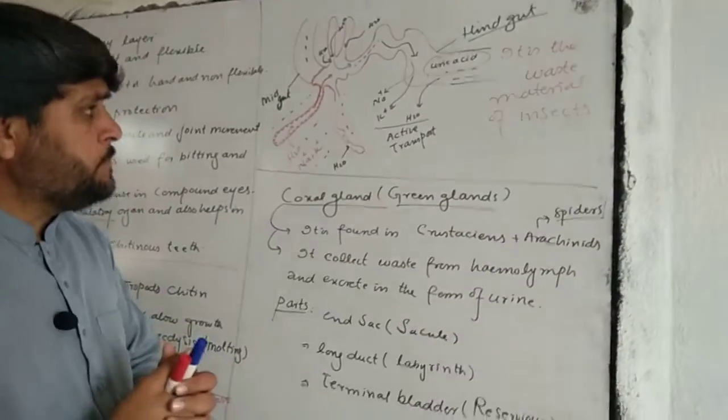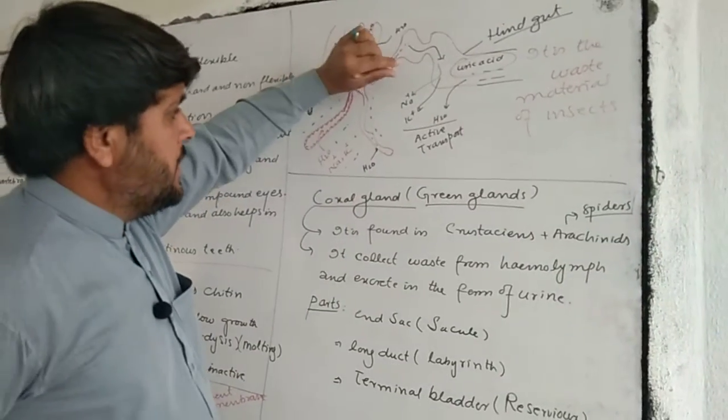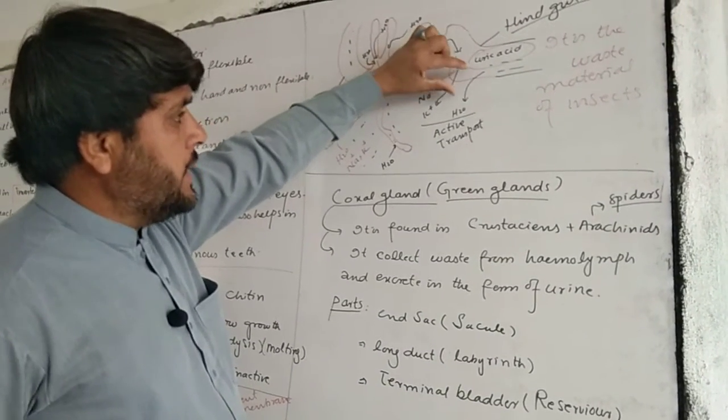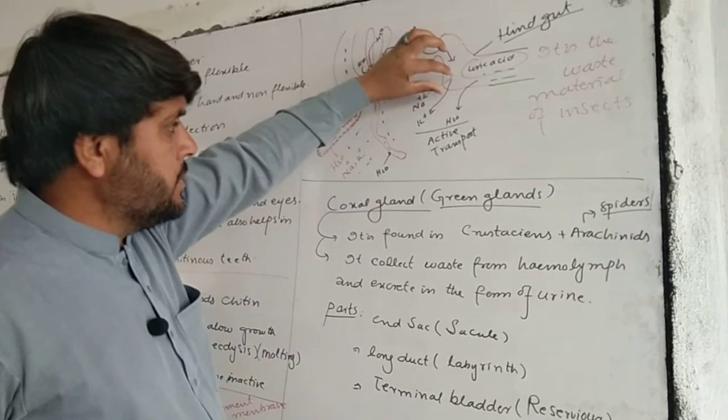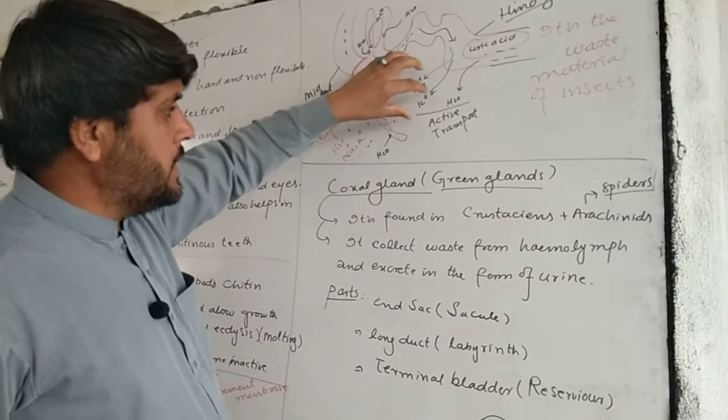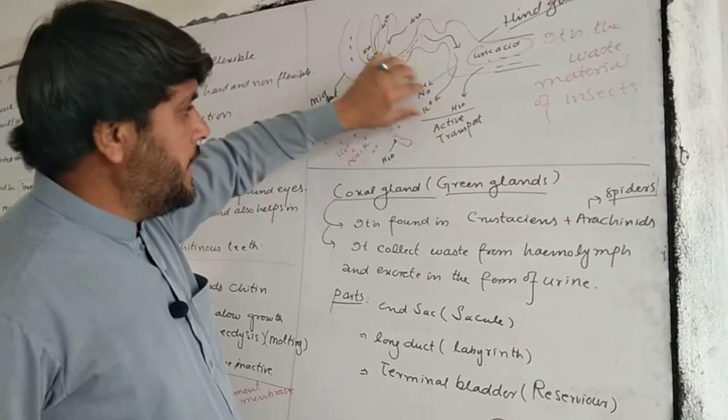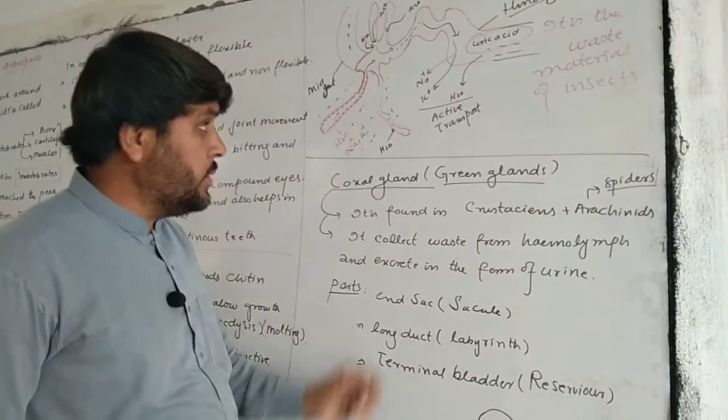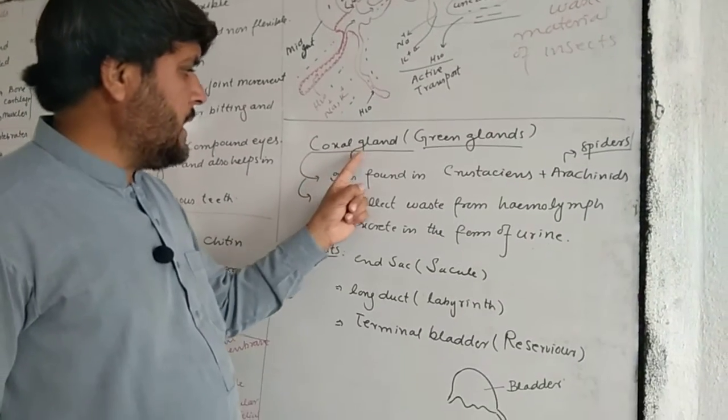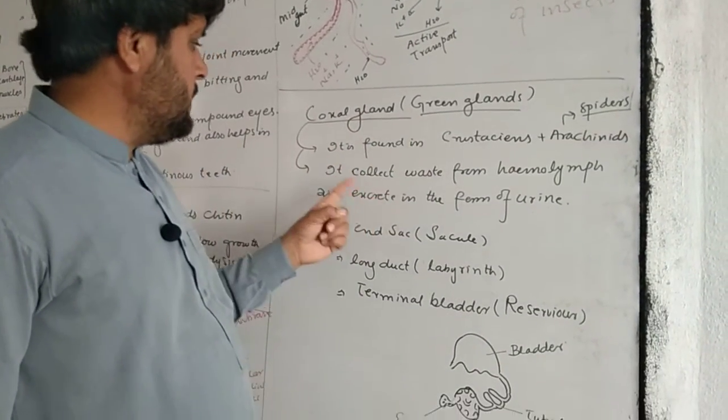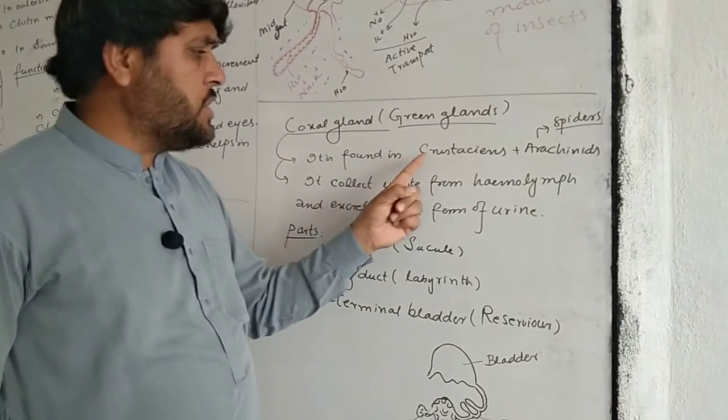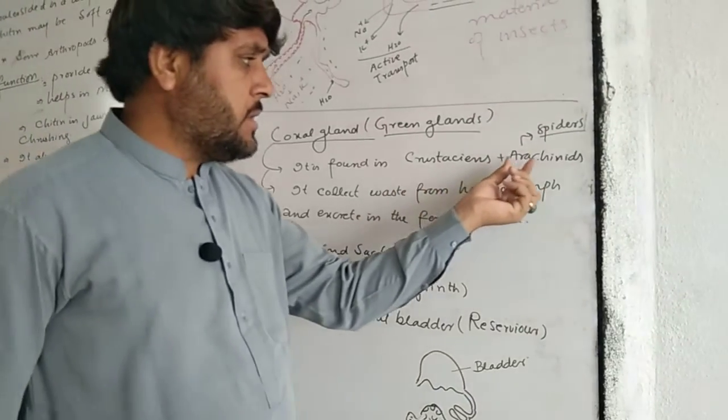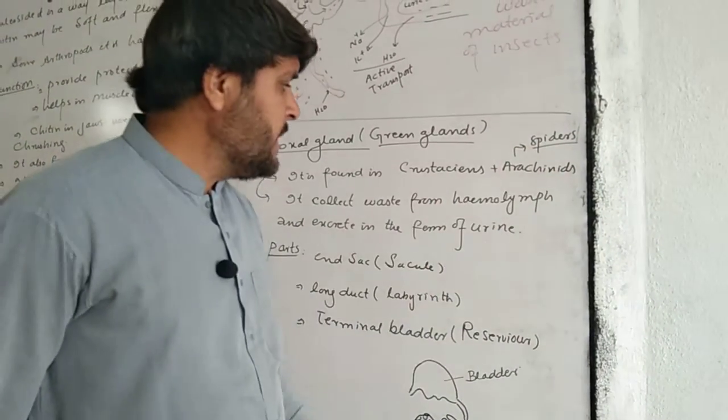The ions and water, by the process of active transport, are absorbed and enter the coelomic fluid. That was the Malpighian tubule story. Now we discuss coaxial gland or green gland. It is found in crustaceans like prawns and in arachnids like spiders. They have green glands.